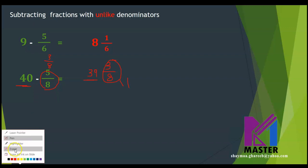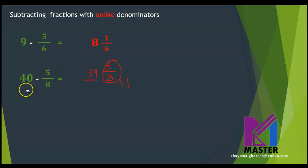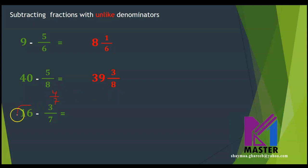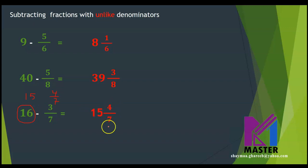One more example: 16 minus 3 over 7. I will do it exactly the same. The 3 sevenths needs 4 sevenths to be one whole, so 4 sevenths will be the fraction part. And the 16 goes down by 1, giving 15. So the answer will be 15 and 4 over 7.